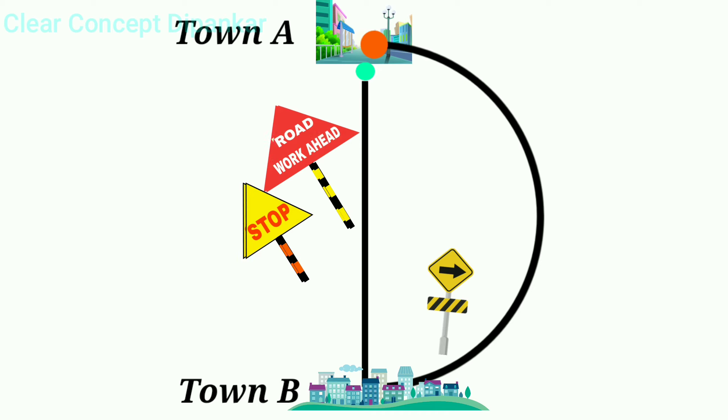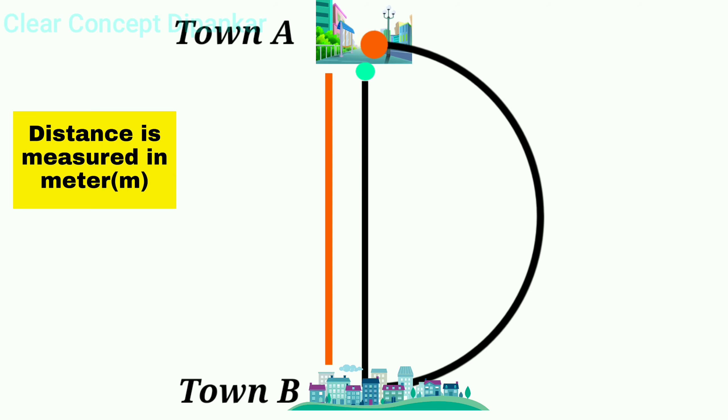Now when the roadblocks are completed, the distance needed to be covered would be something like this. Distance is measured in meter and denoted as lowercase m. The distance between these two towns is about 20,000 meters but because of the trajectory way, you have to cover a distance of 50,000 meters.